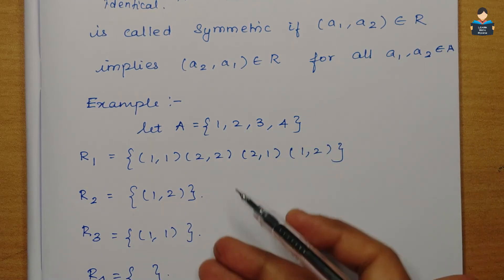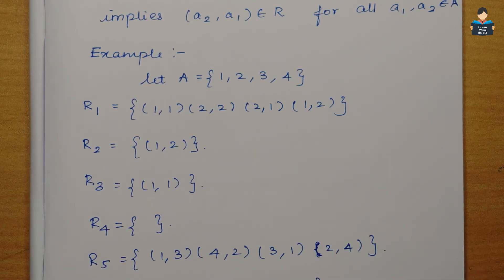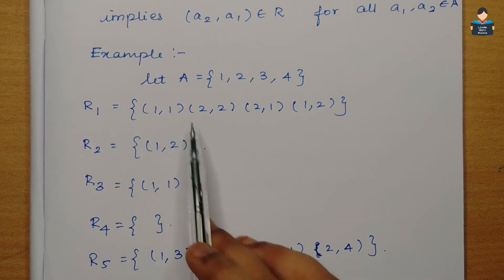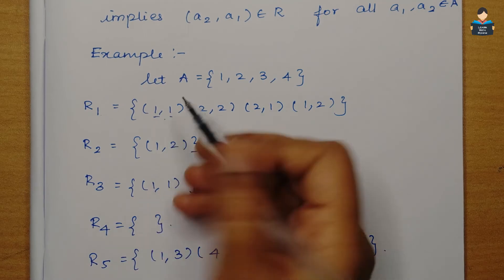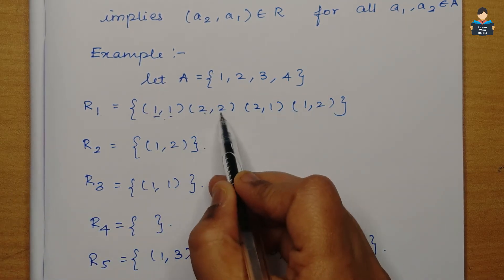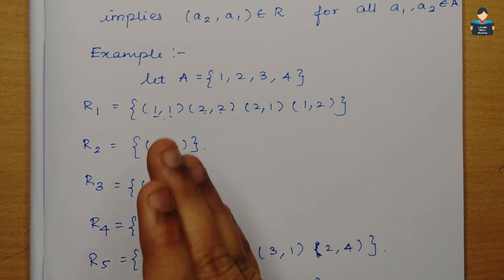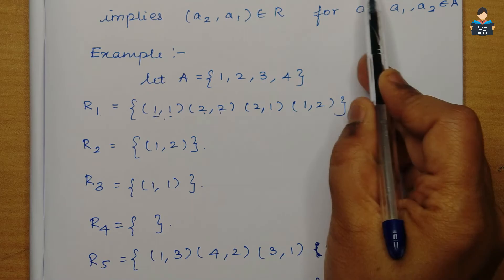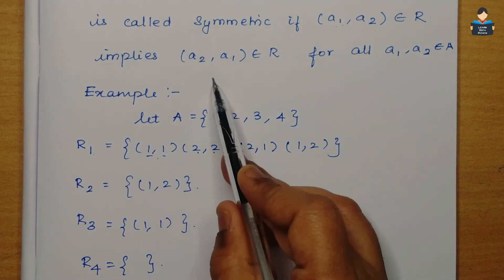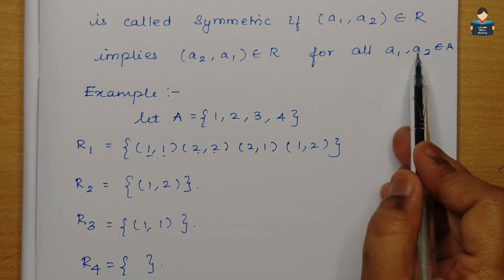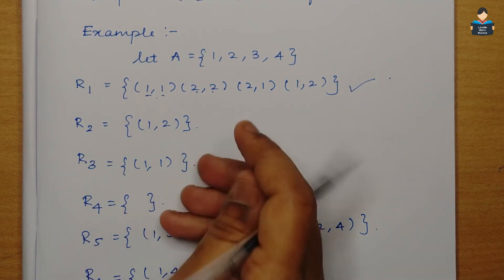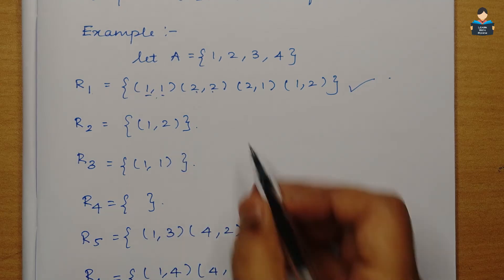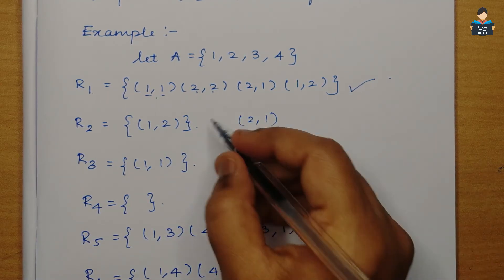For example, relation R1 containing (1,1), (1,2), (2,1) is symmetric because whenever (a1,a2) is present, (a2,a1) is also present. R2 contains only (1,2) but not (2,1), so it is not symmetric. (1,1) alone satisfies the condition vacuously but the full relation is not symmetric.